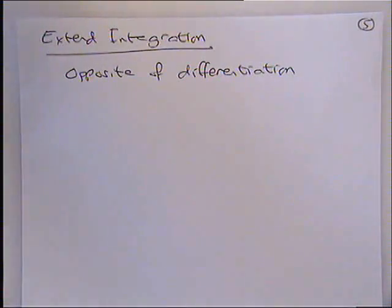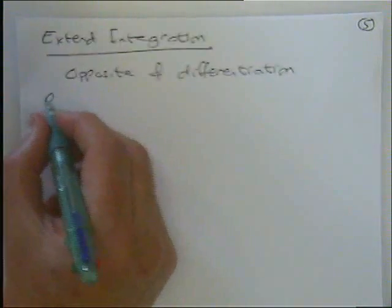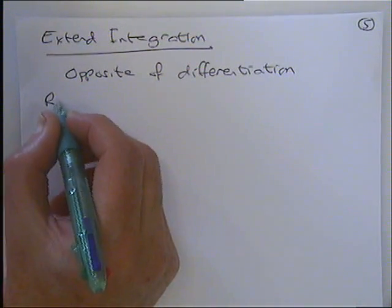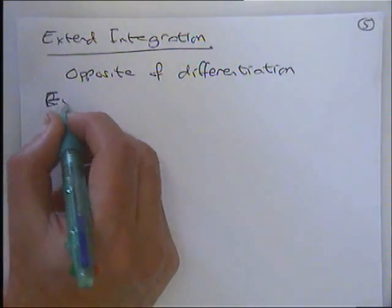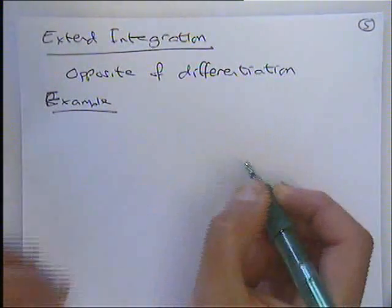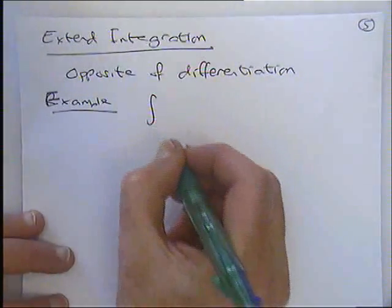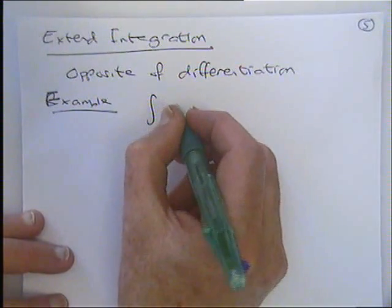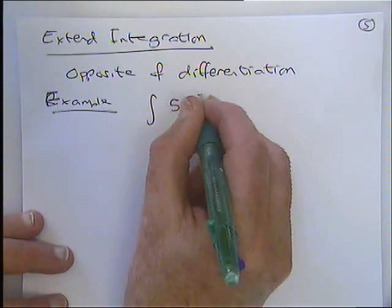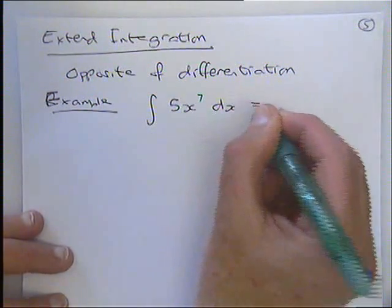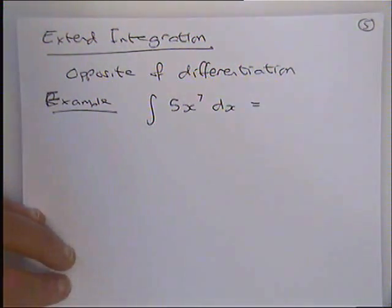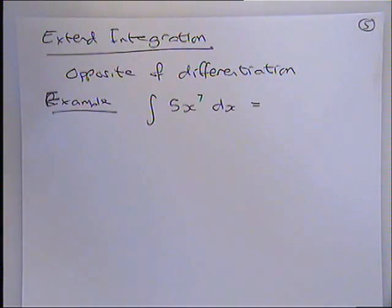So, let's, again, do a, well no, we won't do a recap. We'll just go straight into an example and see what you make of it. So, if I was integrating 5x to the power of 7, this is like the, yeah, this is a recap. This is a recap, isn't it? Okay. What will we get from that one? And I'm going to ask Jack to nominate somebody.